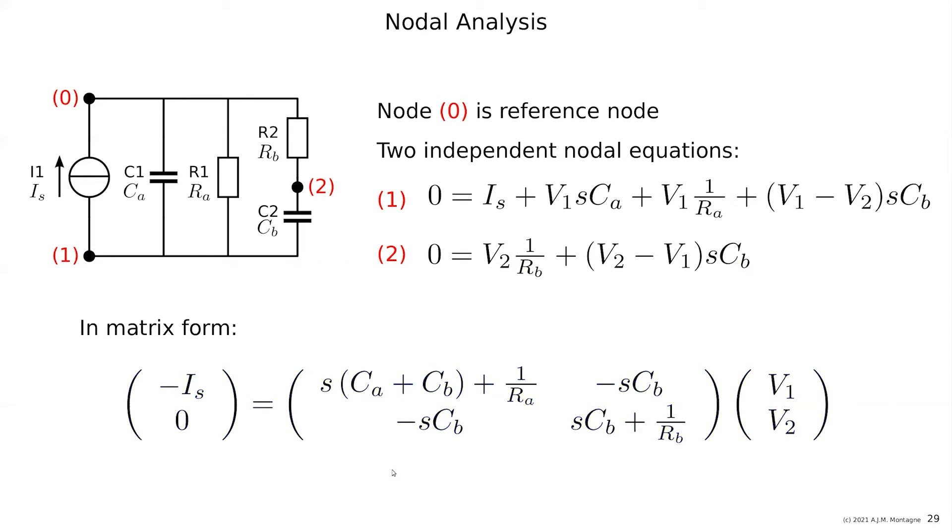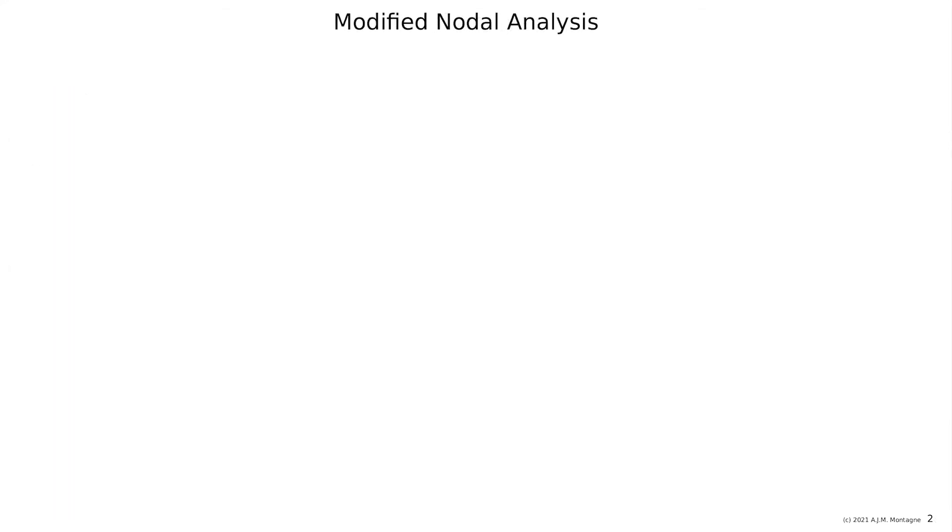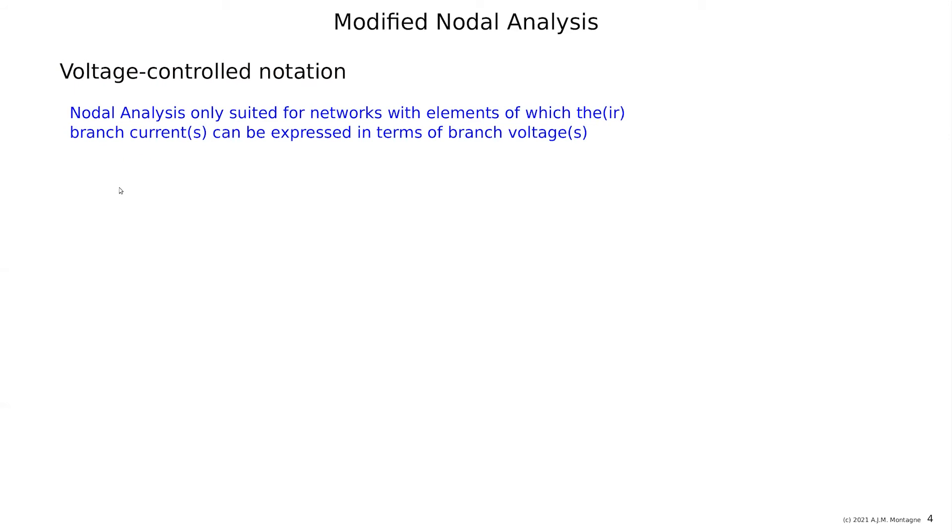This was nodal analysis. And unfortunately, I told you it cannot handle voltage sources. So we need something else for that. So we better do modified nodal analysis. It can handle elements in voltage controlled notations and elements in current controlled notations. So nodal analysis we have seen was only suited for elements of which the branch current can be expressed in terms of a voltage. And that was an omission. So we cannot do voltage sources. And that is what we, for example, want to have. So let's do the voltage source example.